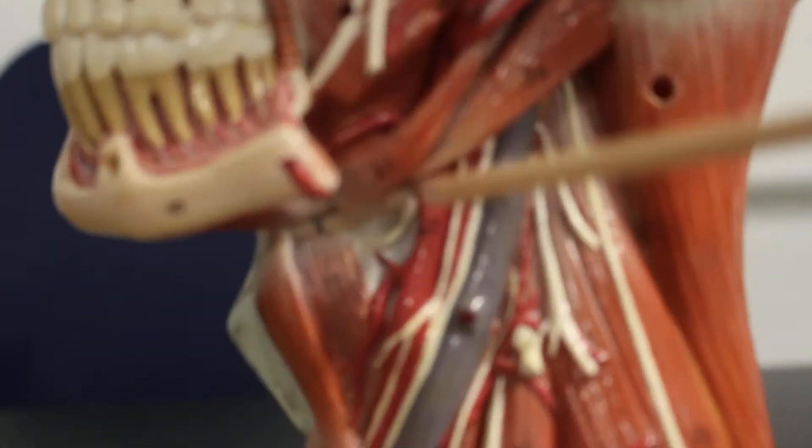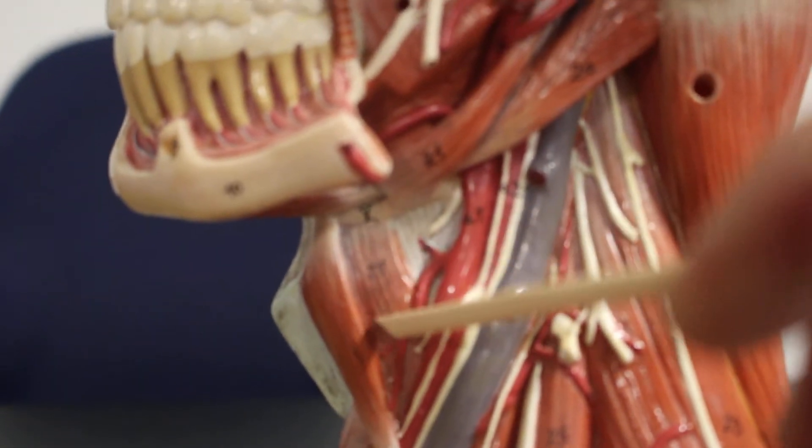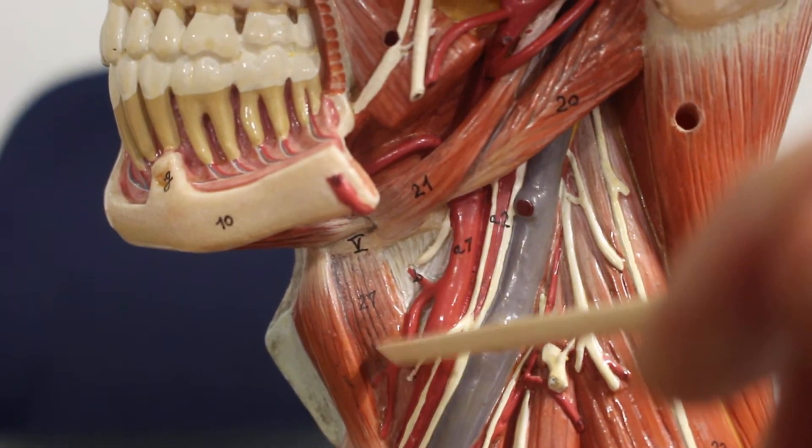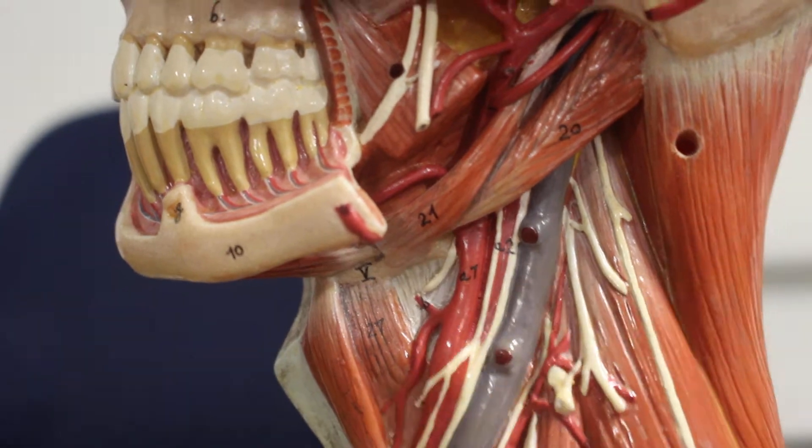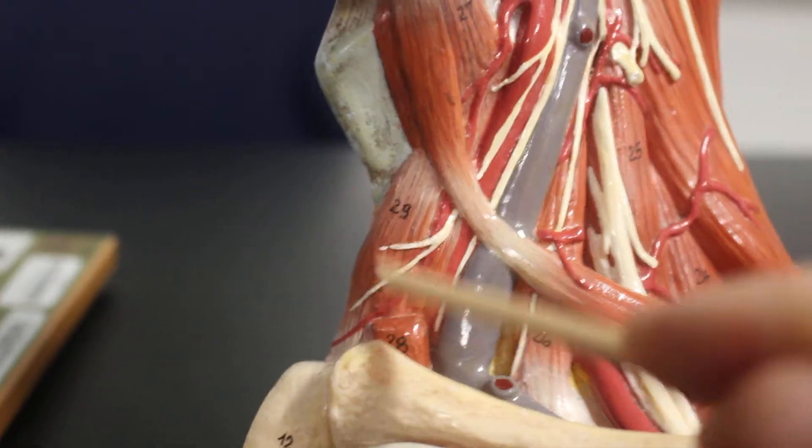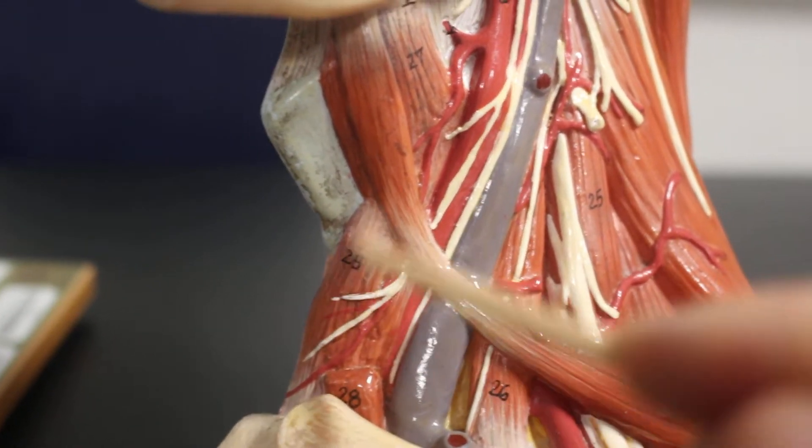Way down here, this little muscle here is the thyrohyoid going from the thyroid cartilage to the hyoid bone. Then this muscle here is the sternothyroid going from the sternum to the thyroid cartilage.